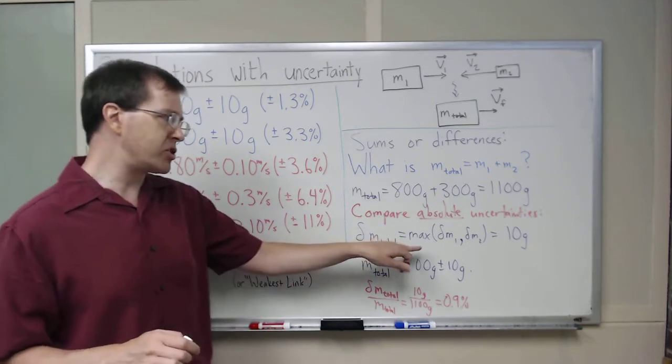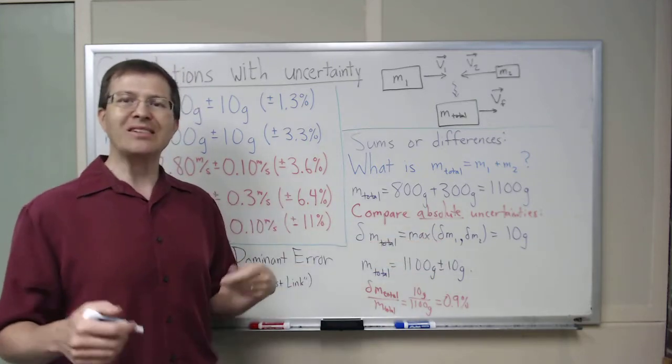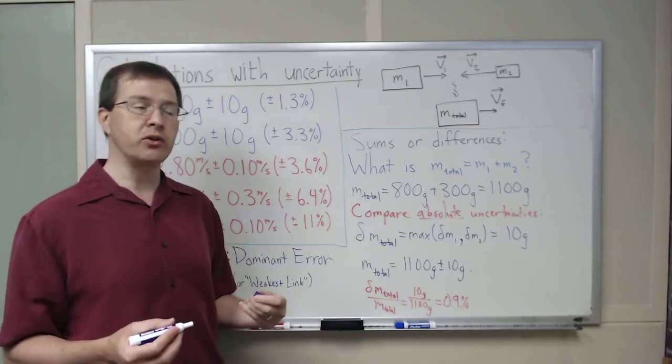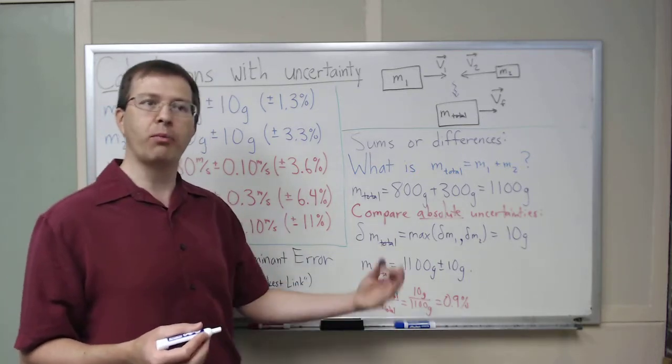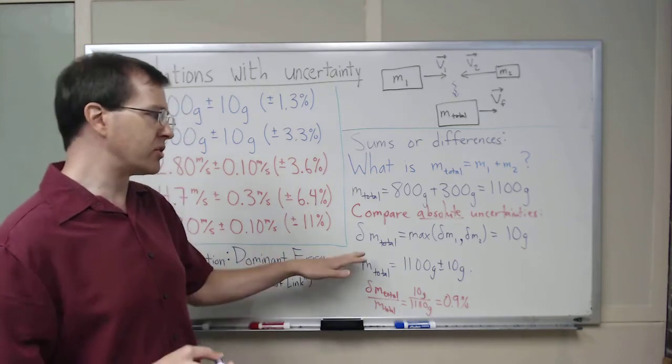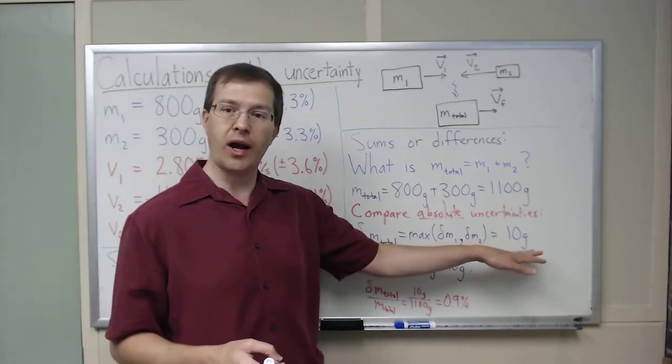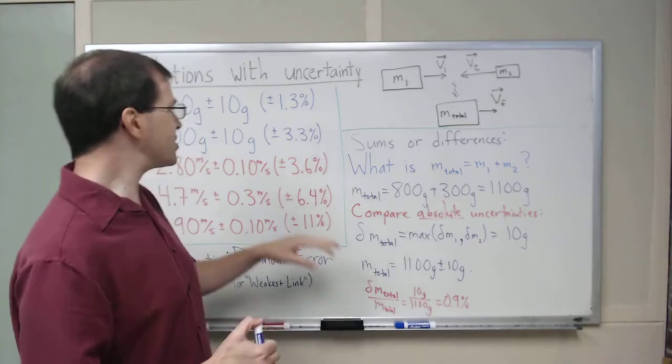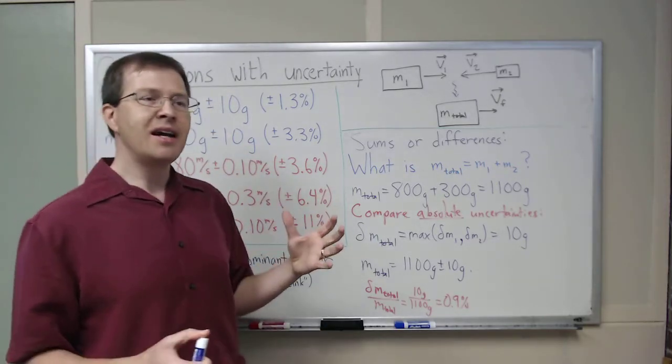I will mention that using the dominant error method by just choosing the larger of the two is really an underestimate compared to what you'd get if you used full professional error propagation with adding uncertainties in quadrature. The actual estimate for uncertainty here should be more like 14 grams, not 10.